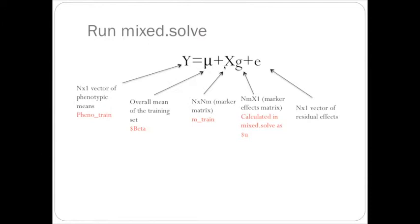And then x is the n by number of marker matrix, and this is the m_train marker matrix that we created in the slide before.